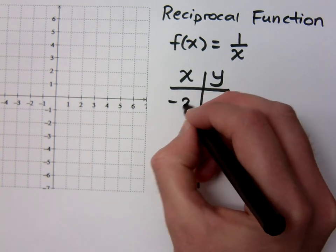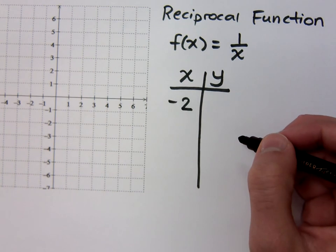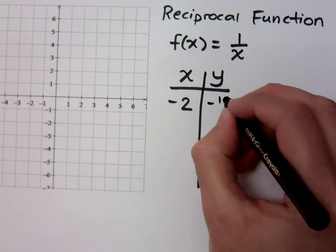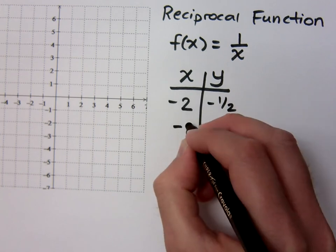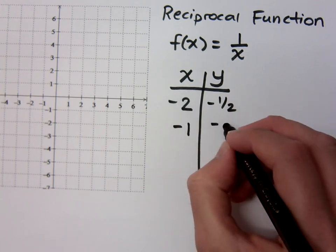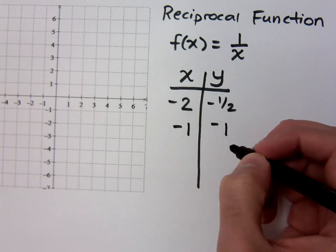If I plug in negative 2, what do you get out? Bless you. You get the reciprocal, which is negative 1 half. If I plug in negative 1, what do I get? I get the reciprocal, which is negative 1.